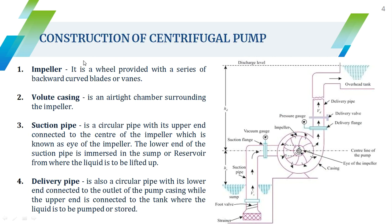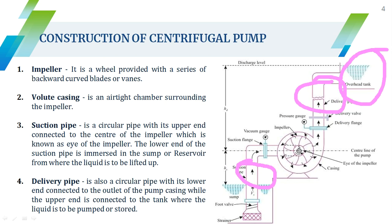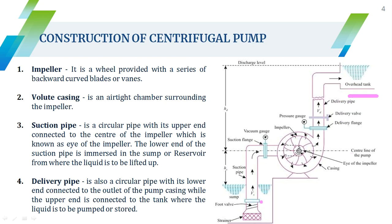Once you understand the definition of the centrifugal pump, we move on to its construction. Construction is very important — when writing or explaining about the centrifugal pump, you start with construction and then move on to operation. There are four main parts: the impeller, volute casing, suction pipe, and delivery pipe. In the diagram you can see the suction pipe, the delivery pipe, the overhead tank, and the strainer on the suction pipe.